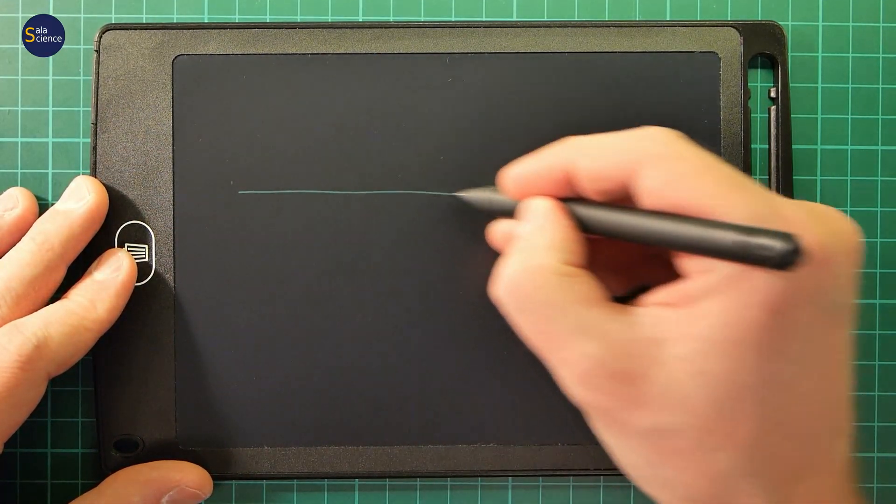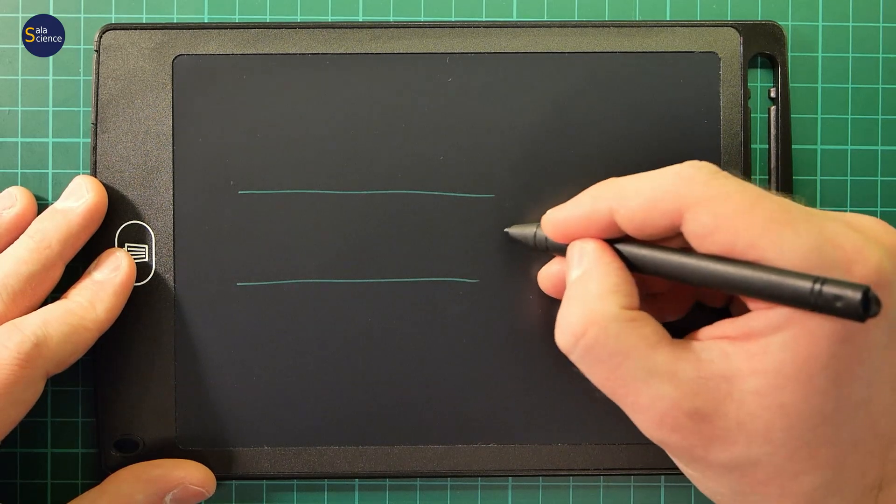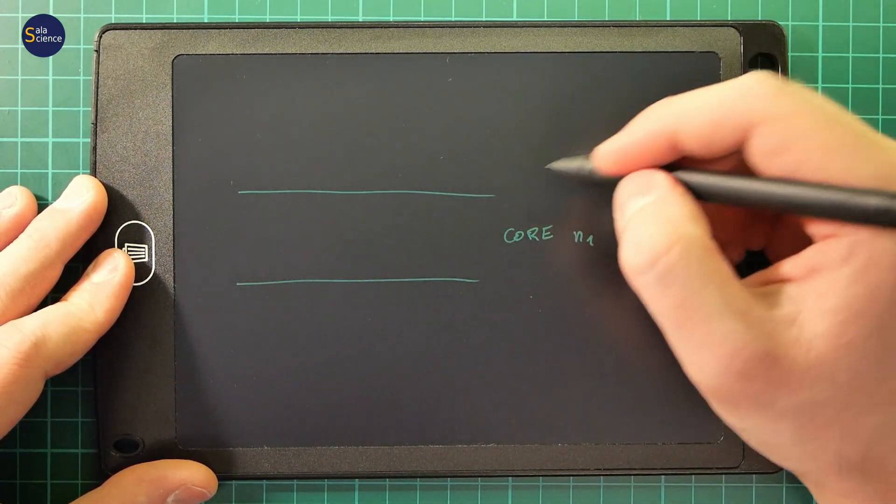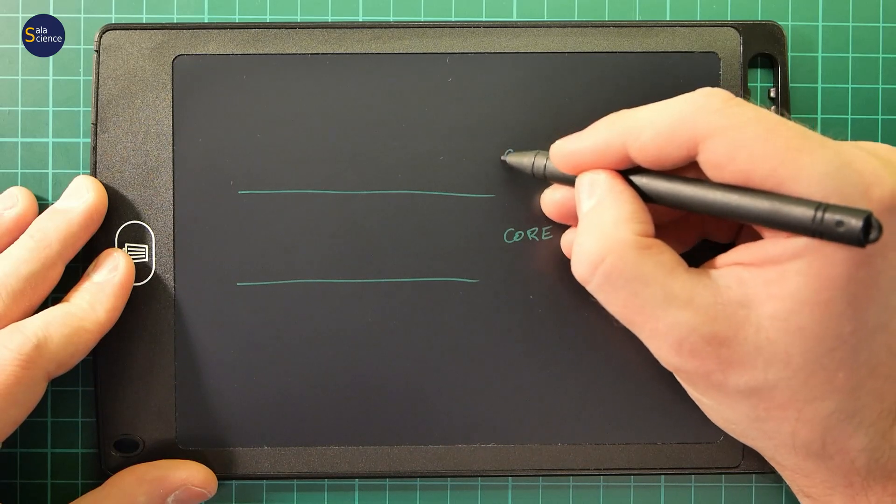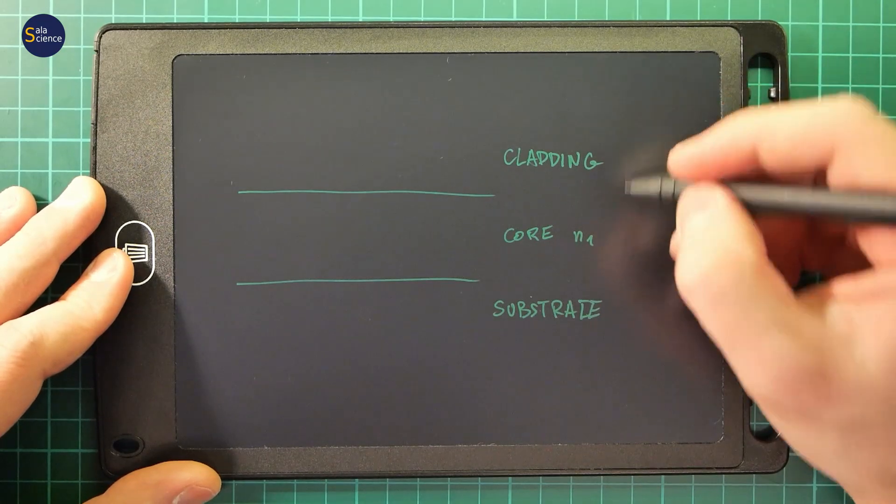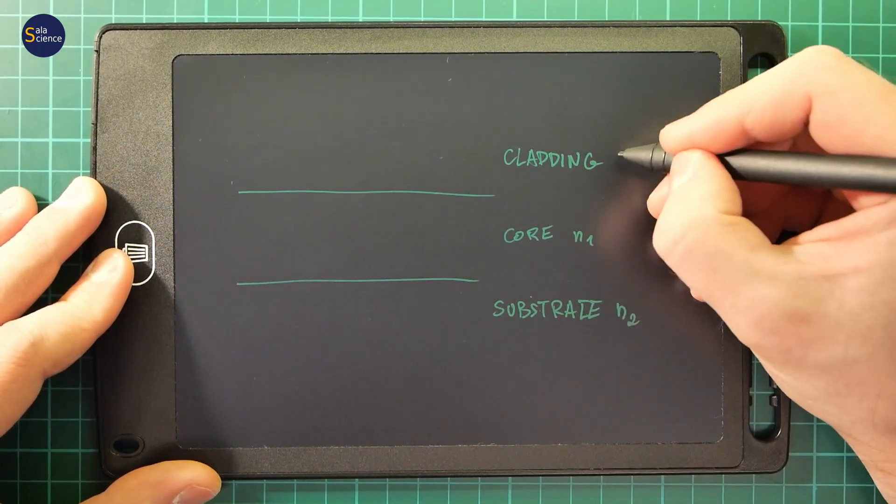Consider a waveguide. We have a core with refractive index N1, some cladding, and substrate. A planar waveguide. Here is N2, here is N3.